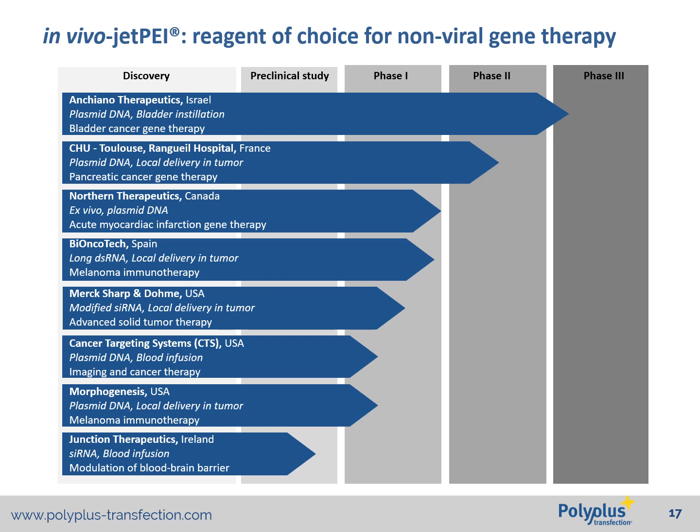As you can see, different types of nucleic acids — plasmid DNA, long double-stranded RNA, sRNA — as well as different administration routes are being used for different therapeutic strategies, mostly for cancer gene therapy and immunotherapy. This really illustrates the versatility and strength of our method.